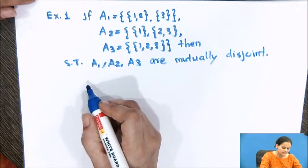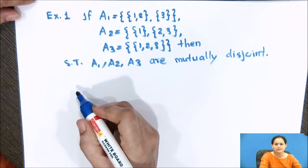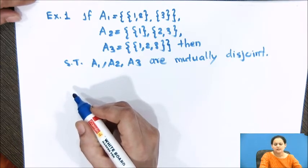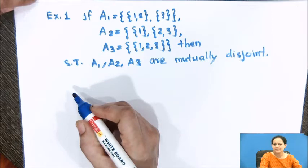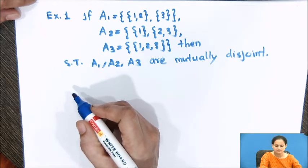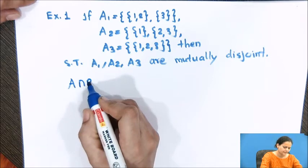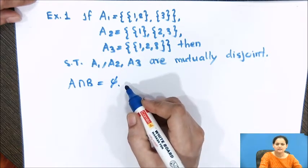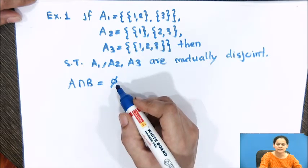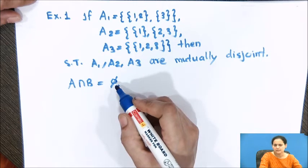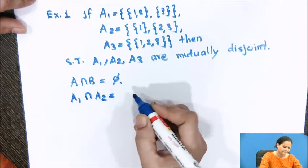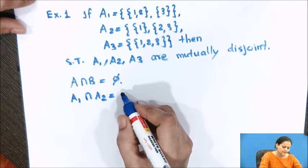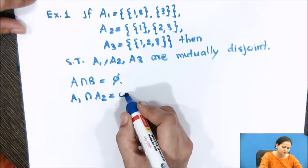In this type of question, first of all we know what mutually disjoint sets are. We have seen a property by which you can say the given sets are mutually disjoint. The property says if two sets, let's say A and B, are mutually disjoint, then they satisfy the condition A intersection B must equal phi, the empty set. If you observe, if I try to take A1 intersection A2, there are no common elements, so it equals phi.